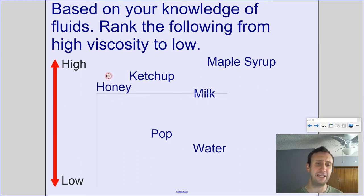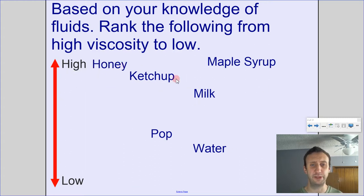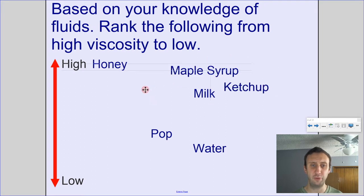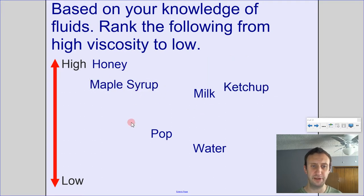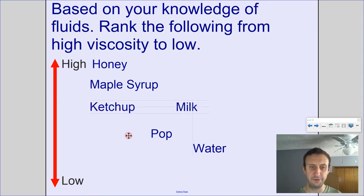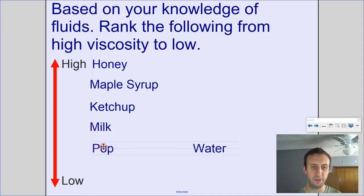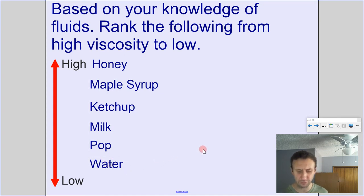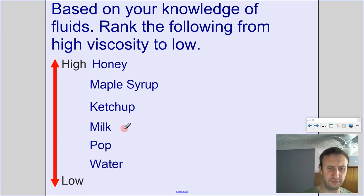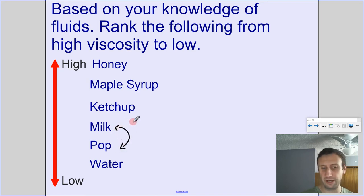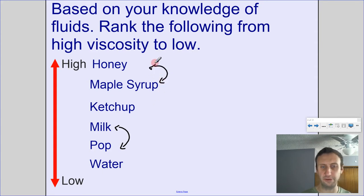I would say honey is the highest viscosity, then maple syrup just underneath honey, then ketchup, then milk, then pop, and finally water. You might switch some of these around — perhaps milk and pop, or maybe ketchup and maple syrup, depending on the type.